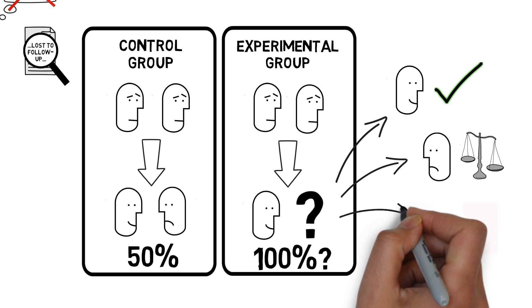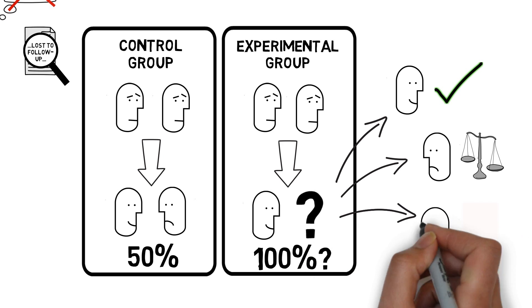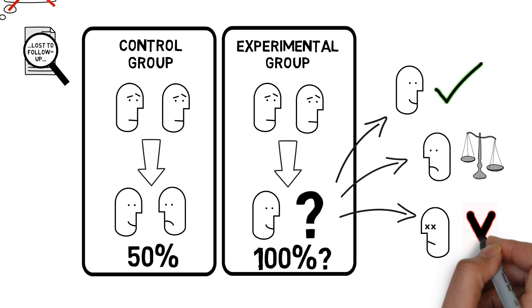Lastly, on top of not having the good outcome, the participant may have had some horrible adverse effect. This would make the control intervention the better choice.